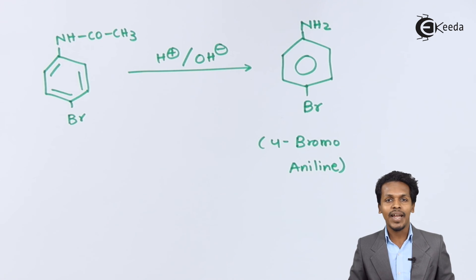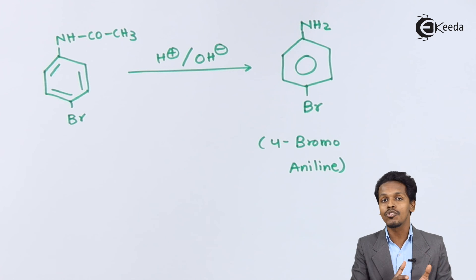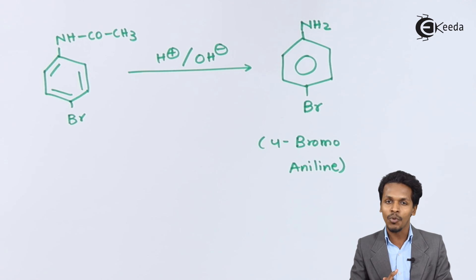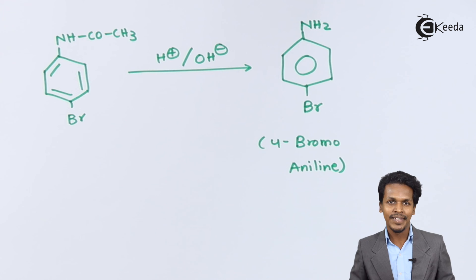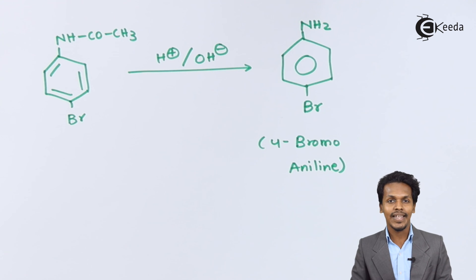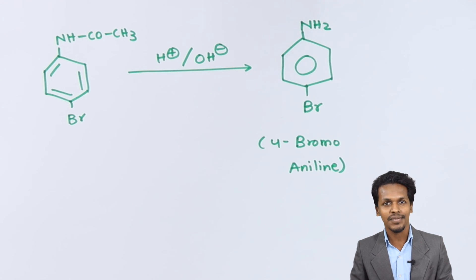So, to obtain a mono-halogen derivative, we convert the NH₂ group into an acetamido group, carry out bromination, and then hydrolyze back to get the mono-halogen derivative. Thank you friends for watching this video. I hope you have understood it clearly, and I hope to see you next time — don't forget to subscribe to the channel.